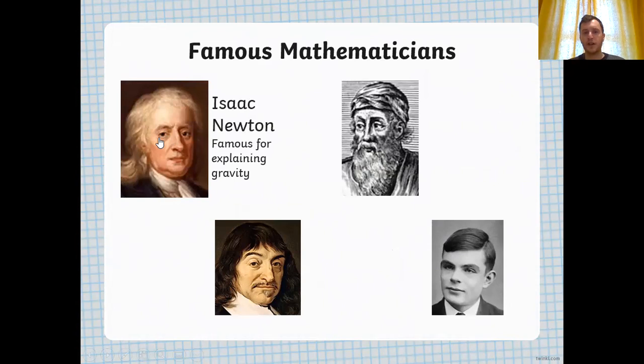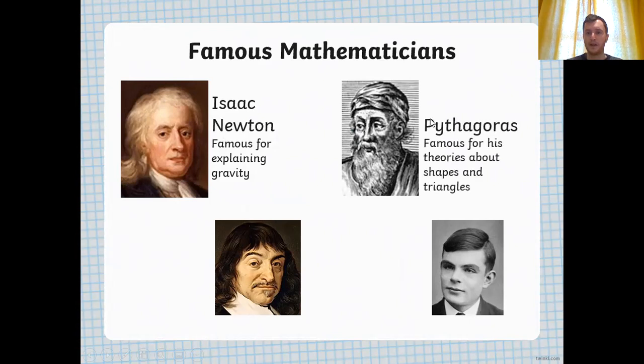We have Isaac Newton. He was famous for explaining gravity, and again, he had a mathematical equation which linked to gravity. We have Pythagoras, and you may have heard of Pythagoras theorem, which links to the area of triangles. And he is famous for his theories about shapes, and as I've just said, about triangles too.